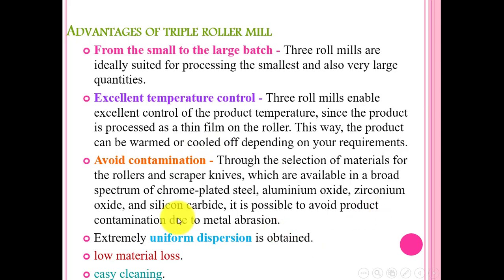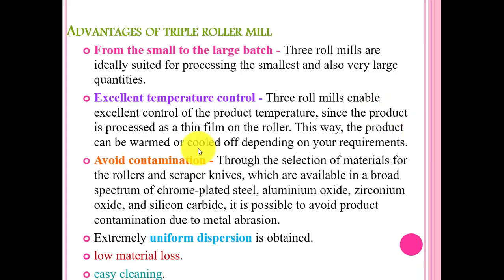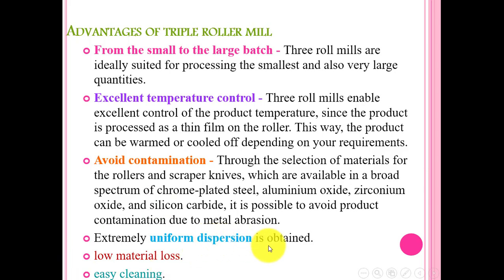To avoid contamination, selection of material for the roller and scraper knife is important. They are available in a broad spectrum: chrome-plated steel is used here because contamination can occur by abrasion or attraction between the scraper and roller. To avoid this, chrome-plated steel is used as it is very resistant to abrasion. Aluminium oxide, zirconium oxide, and silicon carbide are also options. It is possible to avoid product contamination during metal operation from abrasion or attraction. Uniform dispersion is obtained, there is no material loss, and it is easy to clean.